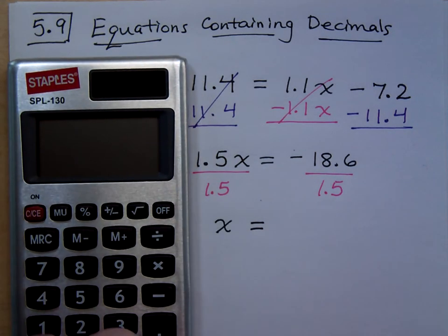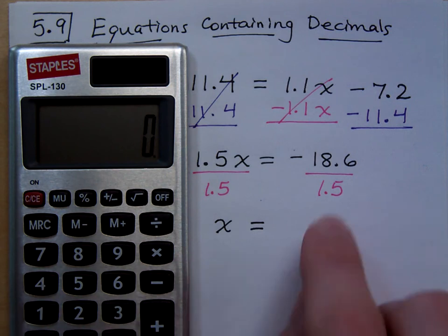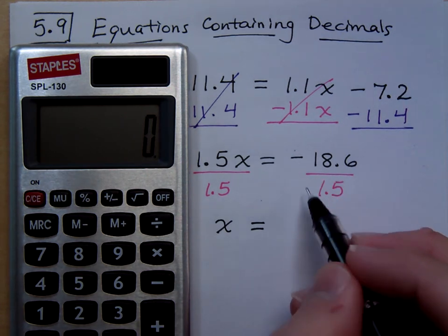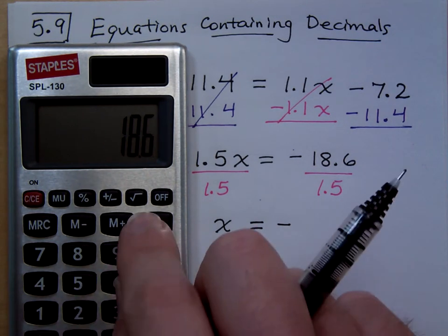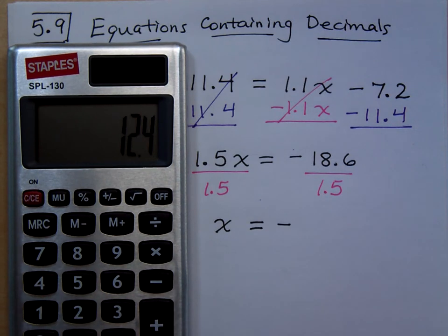Let's make sure that we're having a good day for ourselves. Do I need to worry about my signs for what I'm doing in my division? In the calculator do I need to worry about it? I can but I don't have to. I have a negative divided by a positive which makes this negative, so I have 18.6 divided by 1.5, 12.4 like a boss.